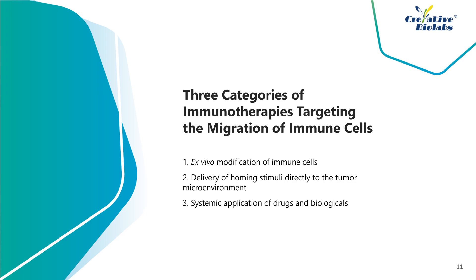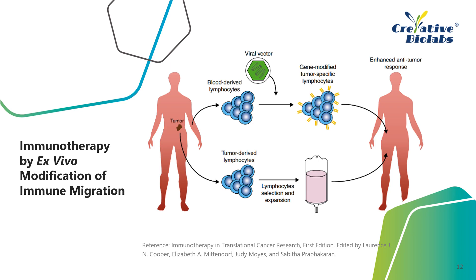Immunotherapies that target the migration of immune cells can be broadly divided into three categories: ex vivo modification of immune cells, delivery of homing stimuli directly to the tumor microenvironment, and systemic application of drugs and biologicals. Immune migratory properties can be modified by cytokine treatment and viral transduction, the latter involving engineered viruses that infect and integrate into the immune cell genome, forcing expression of selected genes such as chemokine receptors. The two principal branches of adoptive cell transfer immunotherapy are ex vivo genetic modification of blood-derived lymphocytes and selection and expansion of tumor-derived lymphocytes; reinfusion of these modified cells may lead to enhanced anti-tumor immunity.